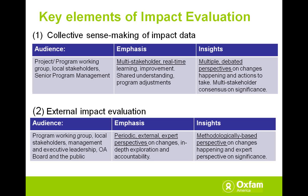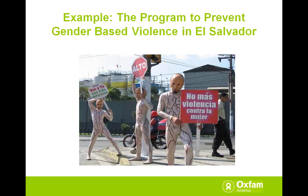I want to focus now on external impact evaluation and use an example of one of our programs to illustrate some points about design and complexity. We have a program in El Salvador to prevent gender-based violence. It works in seven municipalities in El Salvador, and also has major national-level campaigns aimed at policy change, raising popular awareness, and getting gender-based issues into schools. It has six core partners, and in addition to the work they do in their specific geographies, they work collectively on advocacy and campaigning with national targets — the Ministry of Education and so on.